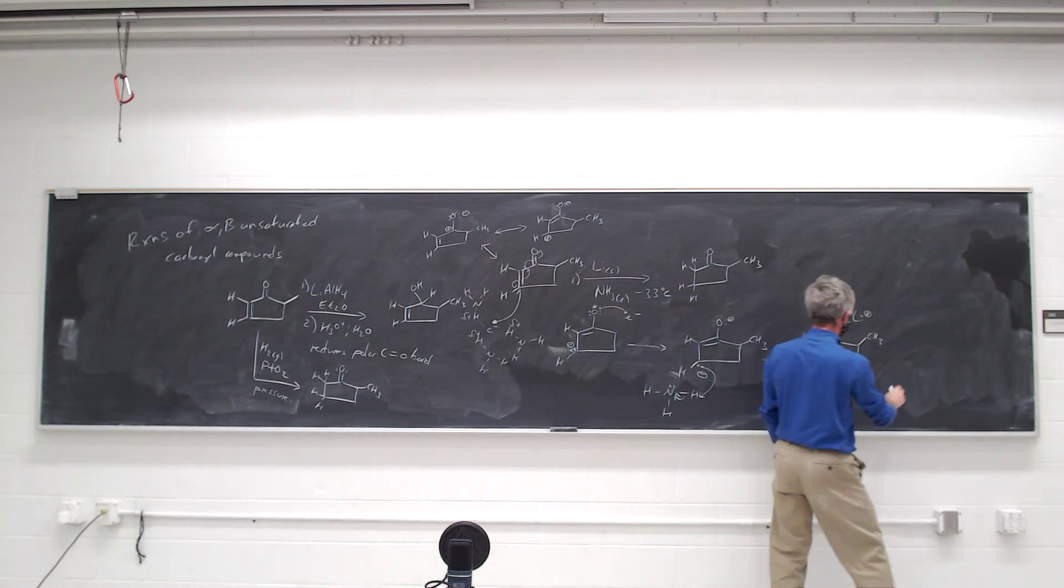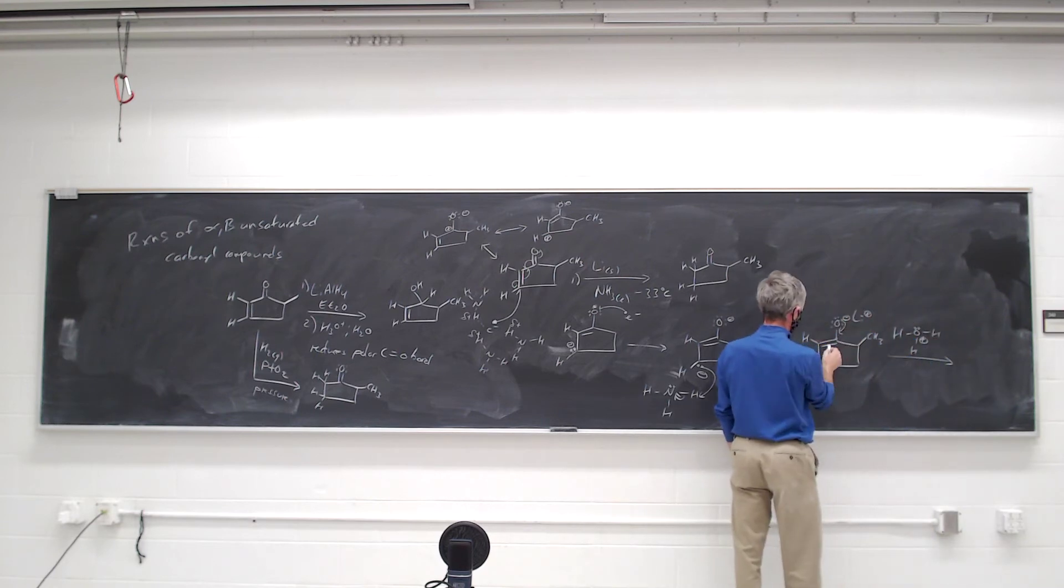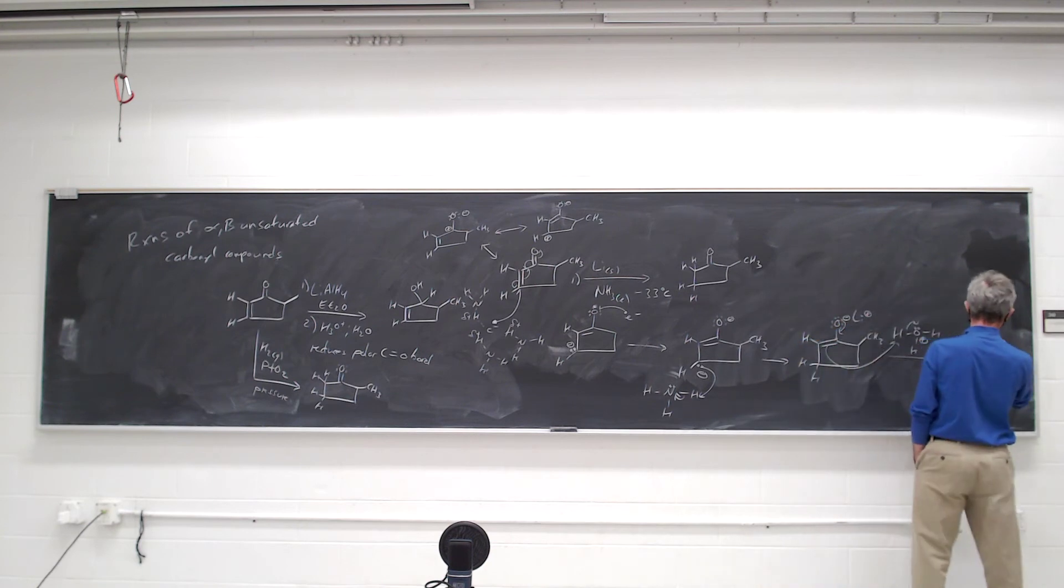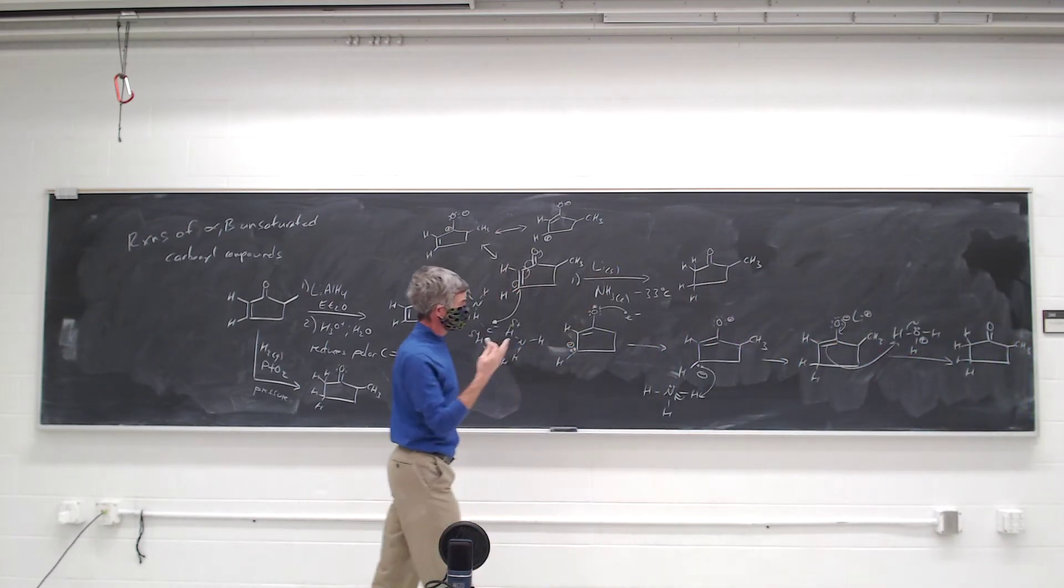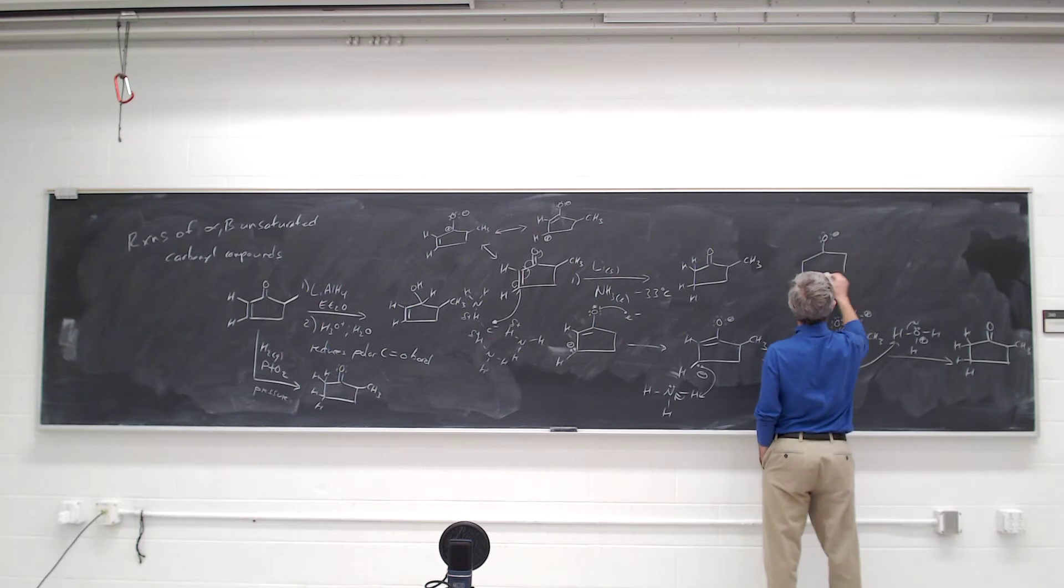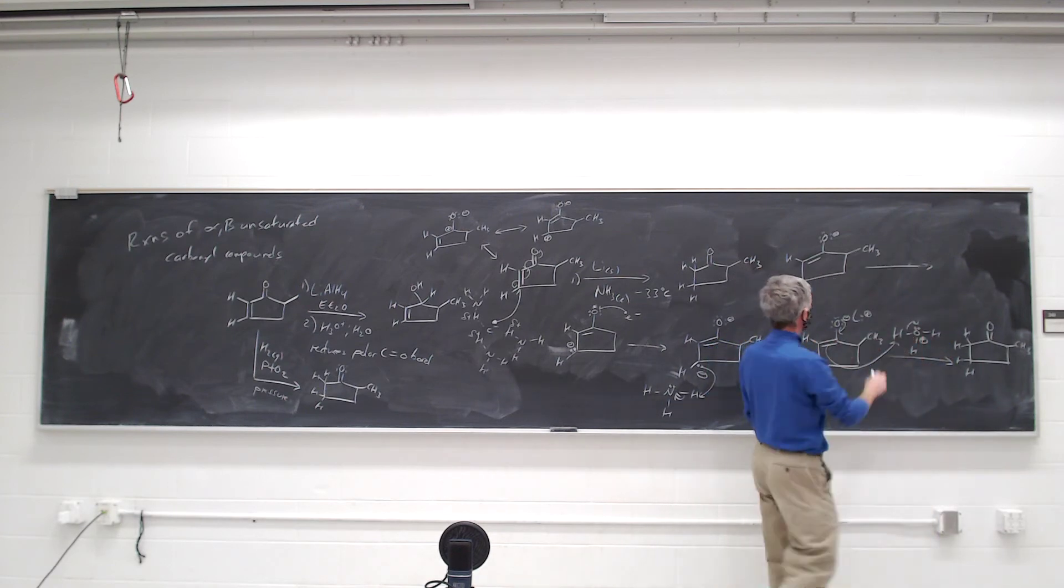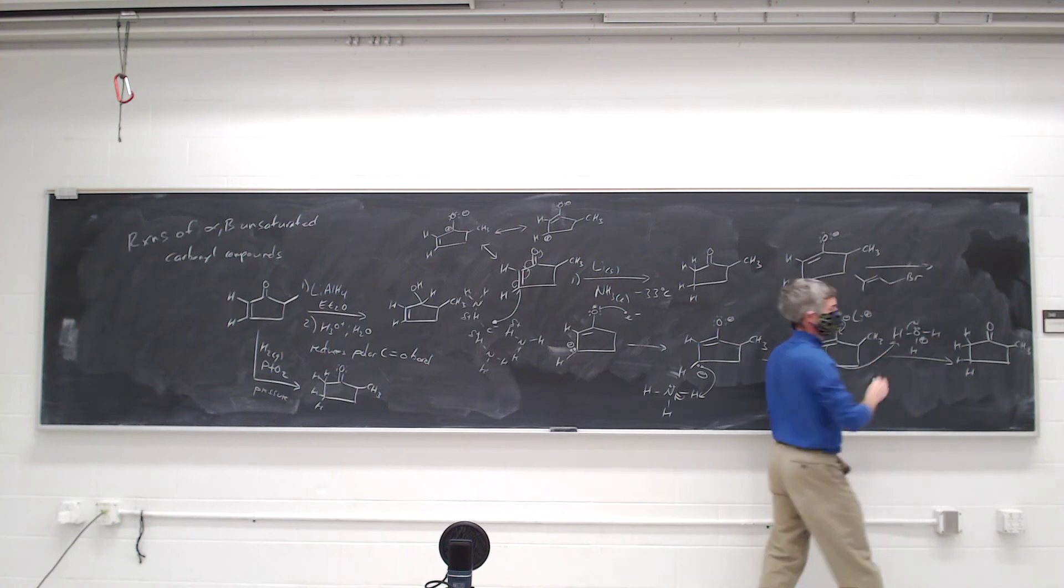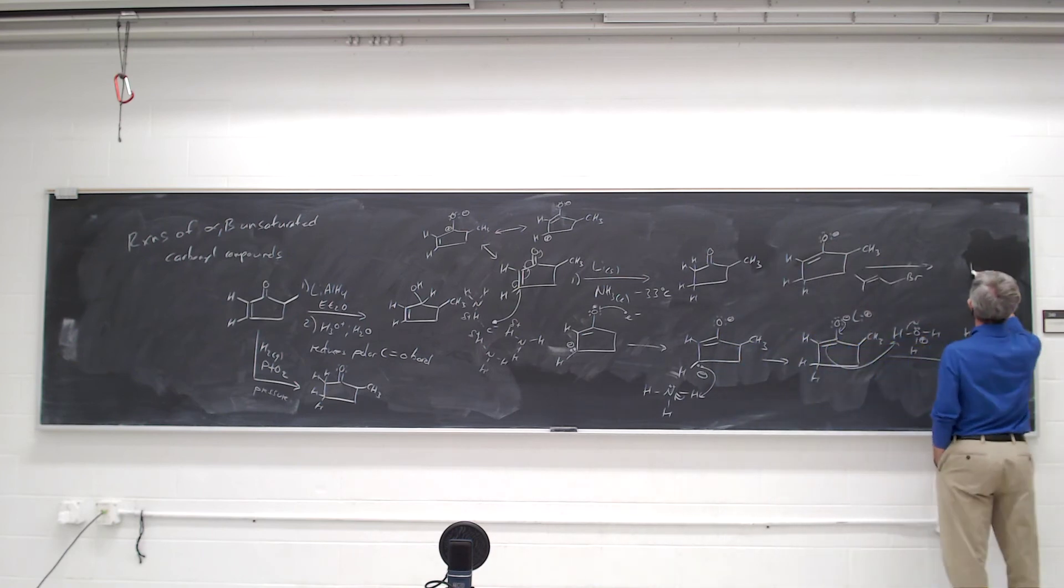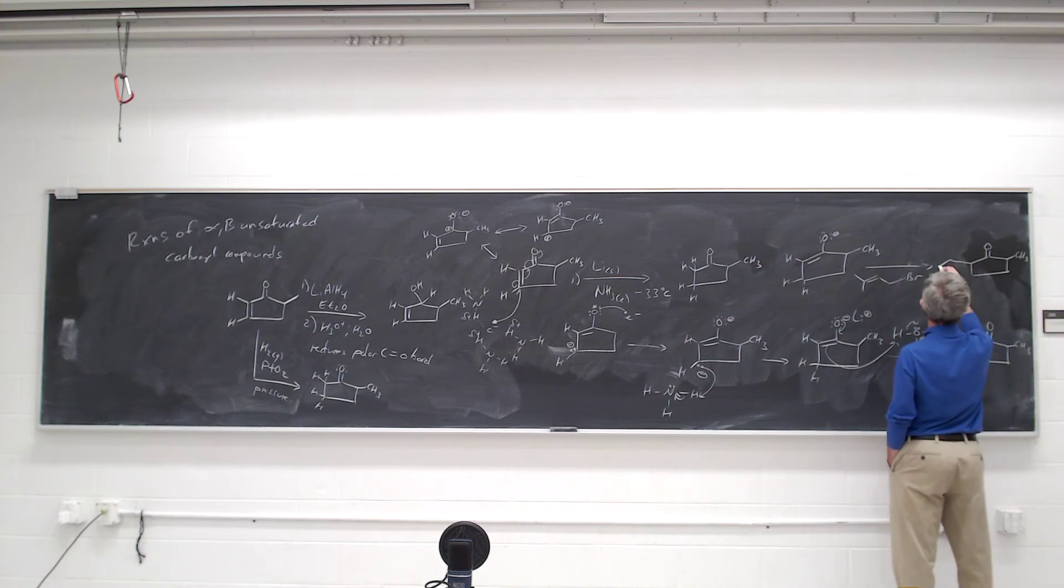This enolate can now actually be trapped. If you just work it up with acid, you're going to add the hydrogen to the alpha carbon to generate the reduction product. But it's also possible to trap that enolate with alkyl halides, just like any other enolate can be trapped, and make new carbon bonds. So I could, for example, react that with that same alkyl halide that we have on the quiz questions, and make new carbon bonds. And I would make that new carbon bond selectively over at this side.